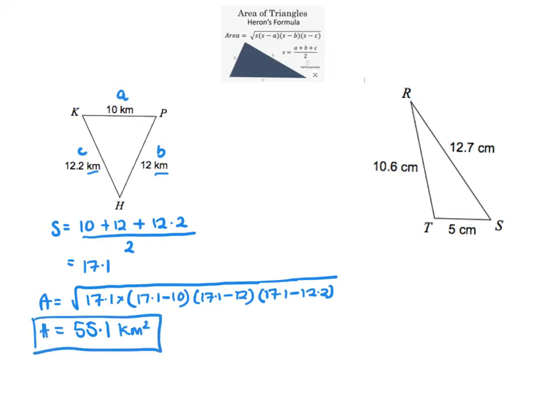Alright, so let's go and try the other one. So I'm just going to call that A, B and C. So first I need to find what S is. So I'm adding up all the sides and dividing it by 2 to get what S is. So S ends up being 14.15.